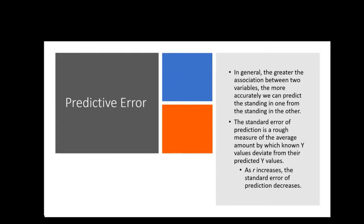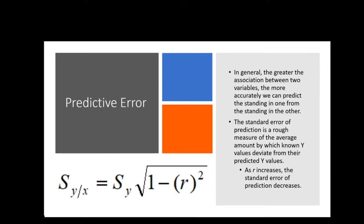I want to show you this visually with the math and then also with a chart. Our calculation starts as a standard deviation — this is how wrong we are, how much our score deviated.